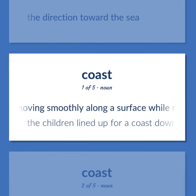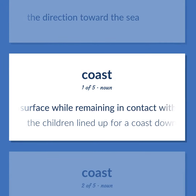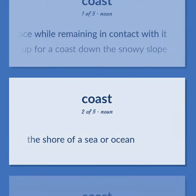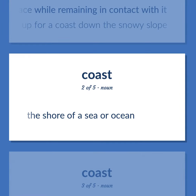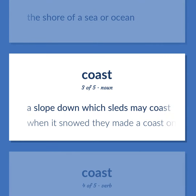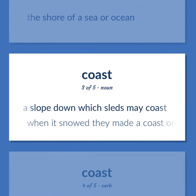Coast. The act of moving smoothly along a surface while remaining in contact with it. The children lined up for a coast down the snowy slope. The shore of a sea or ocean. A slope down which sleds may coast. When it snowed they made a coast on the golf course.